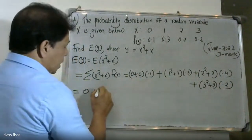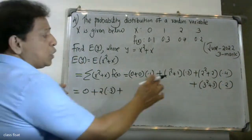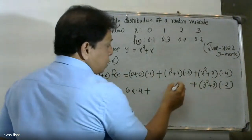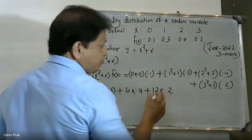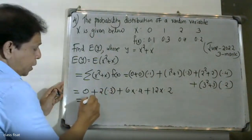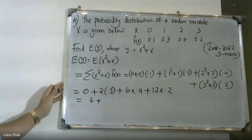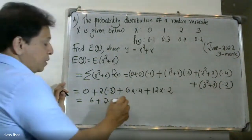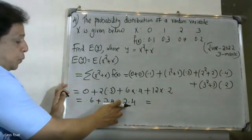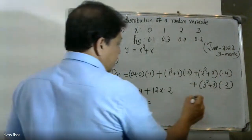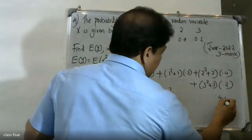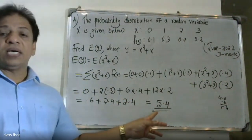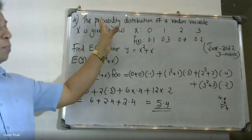So the terms are: (1 squared + 1) = 2, times 0.3 gives 0.6. Plus (2 squared + 2) = 6, times 0.4 gives 2.4. Plus (3 squared + 3) = 12, times the corresponding probability. Summing: 0 plus 0.6 plus 2.4 plus additional terms.